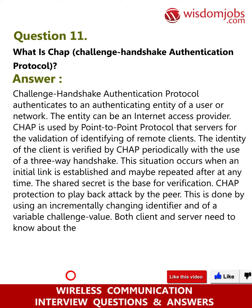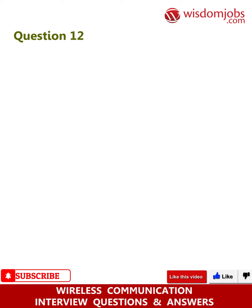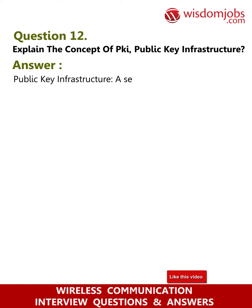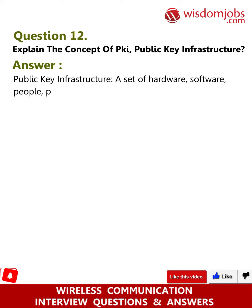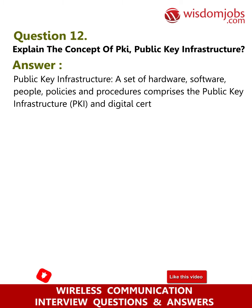Both client and server need to know about the plain text of the secret, which is used by CHAP. Question 12: Explain the concept of Public Key Infrastructure. Answer: Public Key Infrastructure is a set of hardware, software, people, policies, and procedures that comprises the PKI, and digital certificates are issued and revoked within it.